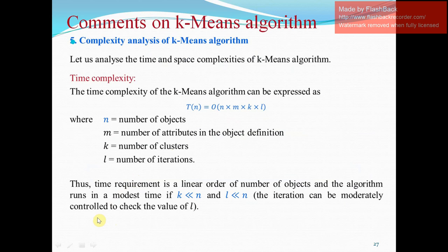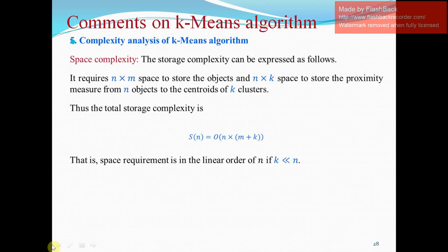Now, complexity analysis of the K-means algorithm says that time complexity of the K-means algorithm can be expressed as T(N) equal to O(N × M × K × L), where N is the number of objects, M is the number of attributes in the object definition, K is the number of clusters, L is the number of iterations. Thus, time requirement is a linear order of number of objects and the algorithm runs in a modest time if K is less than N.